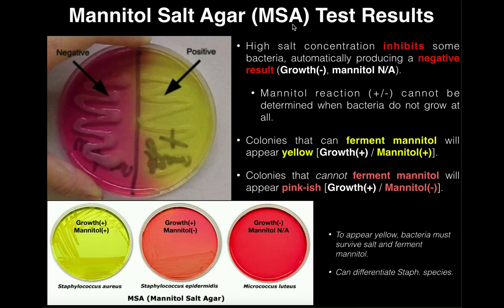So what is this agar? Well first of all it has two things that are very important embedded in the agar itself. One of those is the sugar alcohol called mannitol, and one of the things that MSA will tell us is whether or not bacteria are able to ferment mannitol. The second thing that it has is a very high concentration of salt — 7.5 percent.